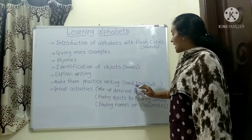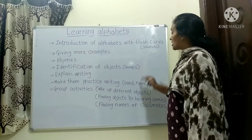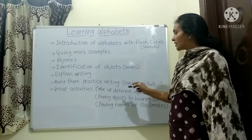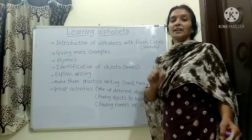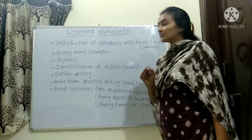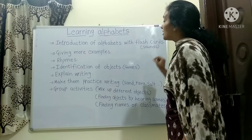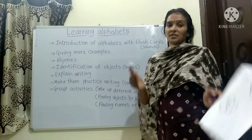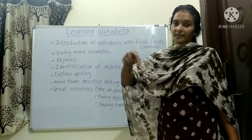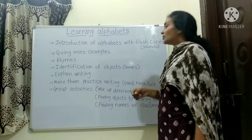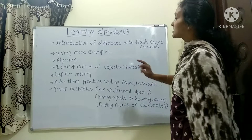After that, what we do is make them practice writing in sand, or rava, or salt — anything, whatever we have. Usually we use rava or salt, sometimes sand also. We make them practice because that is a fun way for the kids. So we take some sand or rava or salt in a tray, and we ask them to write the letter in that. The child enjoys doing that. That is one of the steps.